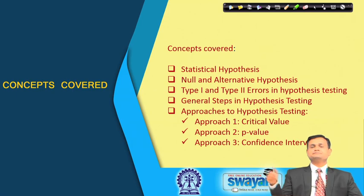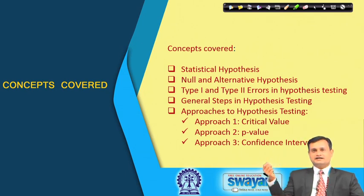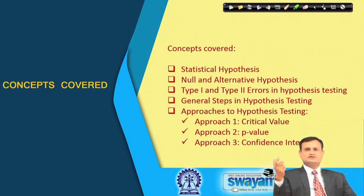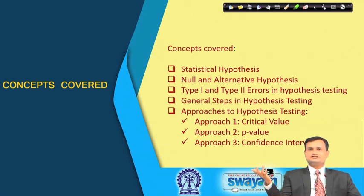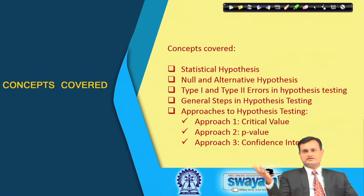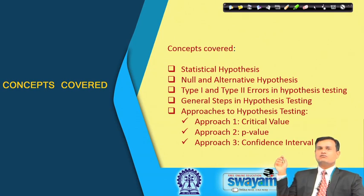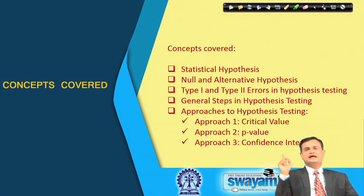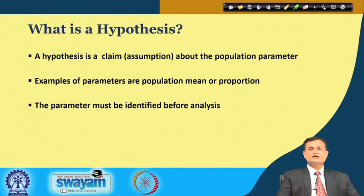With this recap, let us focus on the important topics of lecture 28. We will cover: what is a statistical hypothesis; null and alternative hypothesis; type 1 and type 2 errors; general steps in hypothesis testing; and three approaches — critical value approach, p-value approach, and confidence interval approach.